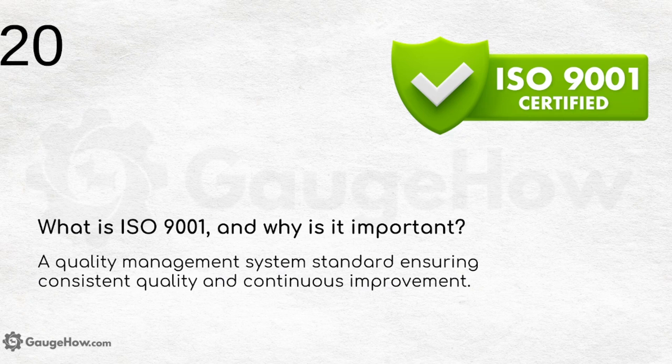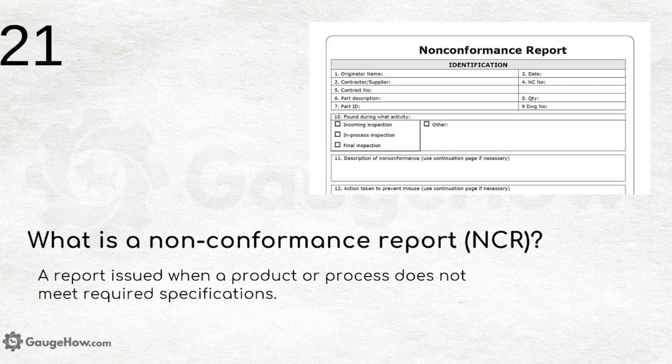What is ISO 9001 and why is it important? It is a quality management system standard ensuring consistent quality and continuous improvement. When you buy a product, you may see 'ISO certified' printed on it — this means the product meets this quality management standard ensuring consistency in quality.